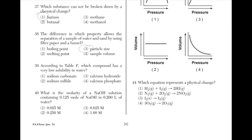According to table F, which compound has a very low solubility in water? Carbonate is insoluble unless combined with group 1 ions or ammonium, so sodium carbonate is soluble because Na is in group 1. Sulfide is insoluble unless combined with group 1 ions or ammonium, so sodium sulfide is also soluble. Hydroxide is insoluble unless combined with group 1 ions, calcium ion, barium ion, strontium ion, or ammonium — so calcium hydroxide is soluble. Phosphate is insoluble unless combined with group 1 ions or ammonium, so calcium phosphate is insoluble because calcium is in group 2.